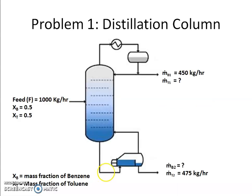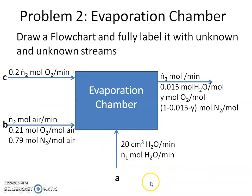Till now, whatever problems I had taken, I always made it a point to find out how many unknowns there were and how many equations you can write. In this particular problem, there were two unknowns — ṁ_T1 and ṁ_B2 — and since there are two components, I can write two independent component balances: two equations and two unknowns, which I can solve.